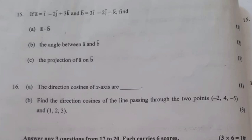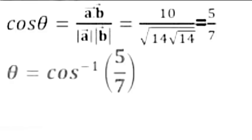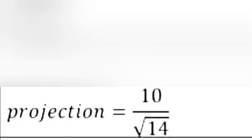Question 15: Given vector a = i - 2j + 3k and b = 3i - 2j + k, find: (a) a·b = 10. (b) cos θ = a·b / (|a||b|) = 10 / (√14 · √14) = 5/7, so θ = cos⁻¹(5/7). (c) Projection of a on b = 10/√14.